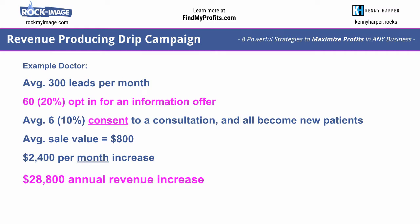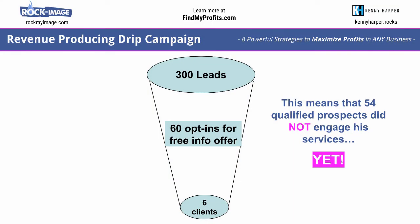Here's an example of a doctor running a marketing campaign. On average, 300 leads per month come through this campaign. Sixty of them — 20% — opt in for an information offer. An average of six of those 60, or 10%, consent to a consultation, and all become new patients. If the average sales value is $800, that's $2,400 per month in increased revenue, or $28,800 in annual revenue increase.